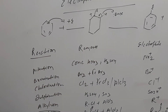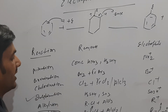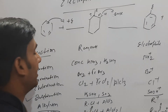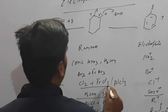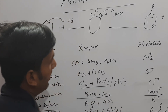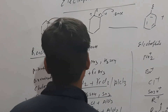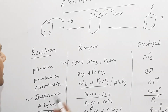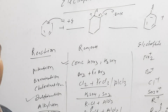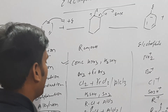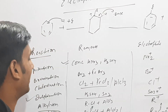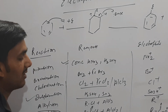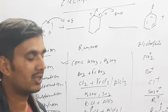तो यहाँ पे हमको देख करके यह समझना होगा - जैसे अगर Sulfonation हो रहा है तो Reagent यह यूज होगा और यहाँ पे Electrophile यह attack करेगा Benzene में। Reagent को देख करके हमको पहचानना होगा कौन सा Reagent है और कौन सा Electrophile है। Nitration में कौन सा Reagent है - जब HNO3 और H2SO4 रहते हैं तो Nitration हो रहा होगा। अगर RCl + AlCl3 हो तो Alkylation या Halogenation हो रहा होगा। यह चीज़ हमको देख करके समझना होगा, तब हम Electrophilic का जो question है उसको कर पाएंगे।